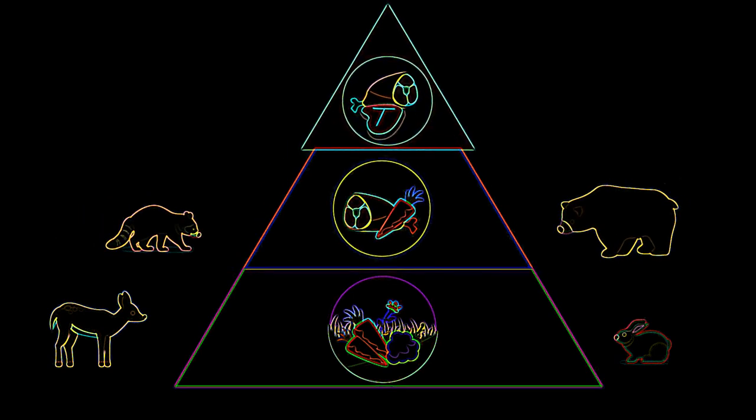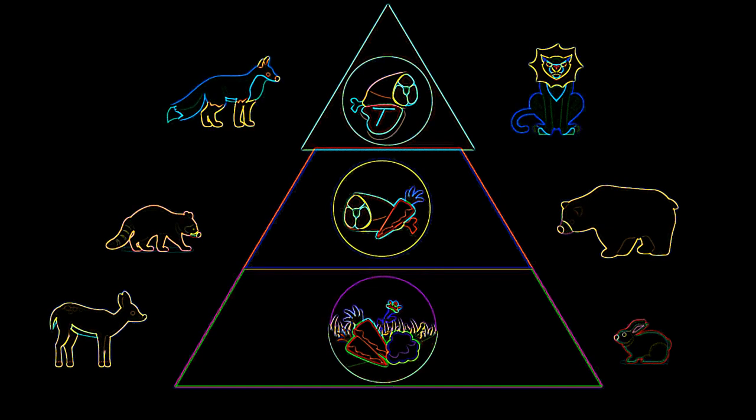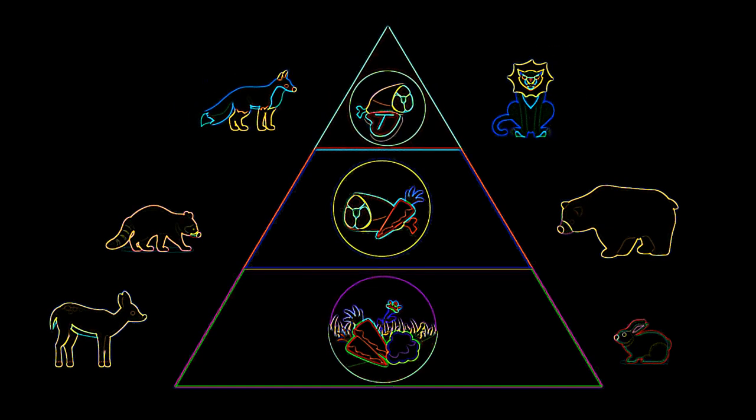The highest trophic level is the carnivore and is represented by animals such as wolves, lions and eagles. Each of these trophic levels interacts with the other either directly or indirectly.